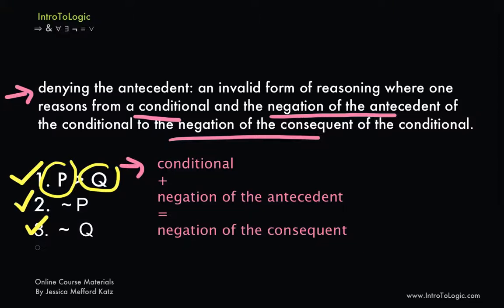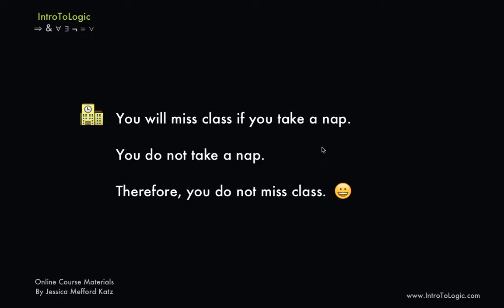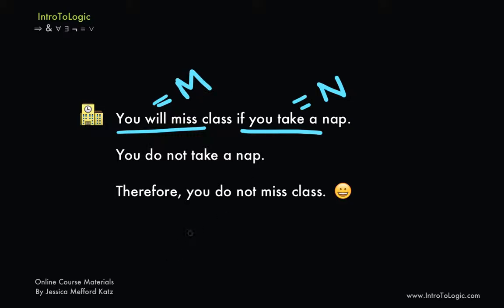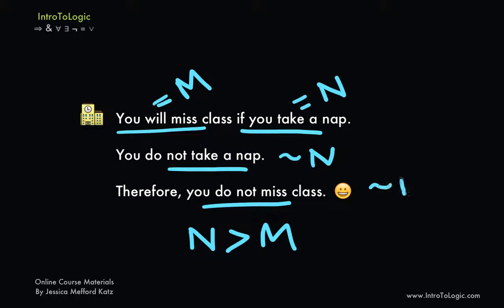Let's look at some examples. Consider: you will miss class if you take a nap; you do not take a nap; therefore you do not miss class. To see whether this is a form of denying the antecedent, we put the argument into symbolic form. We represent 'you take a nap' with the letter n, and 'you miss class' with the letter m. So we have: premise 1 is if n then m; premise 2 is not n; and therefore not m.